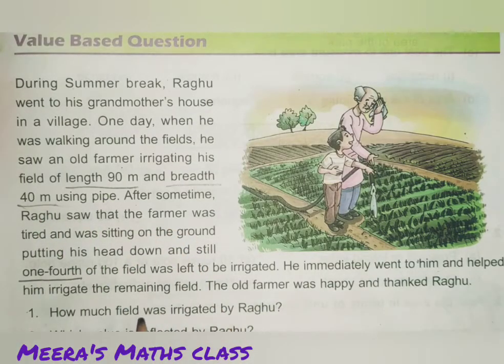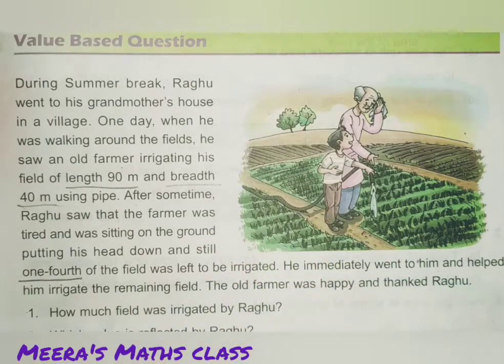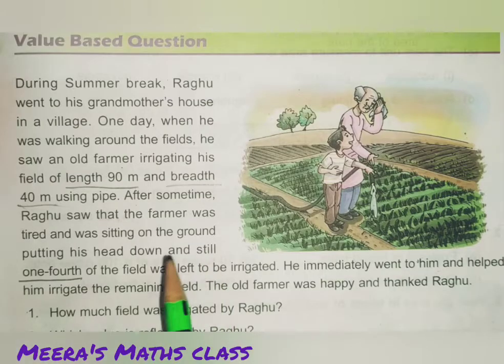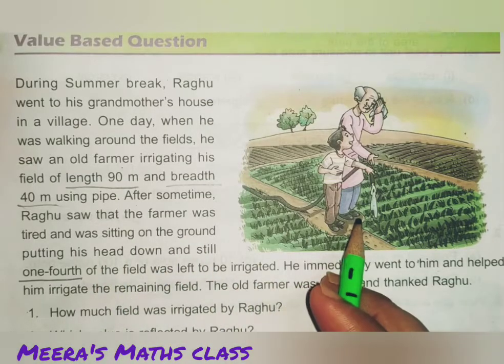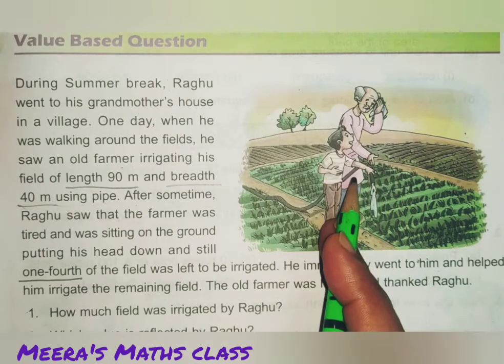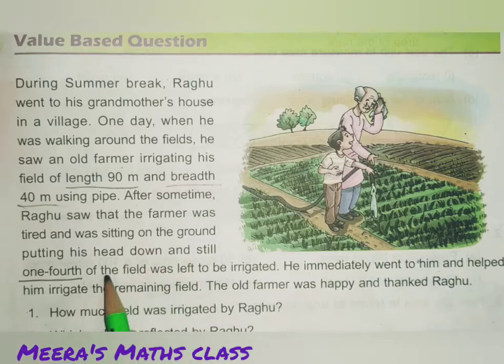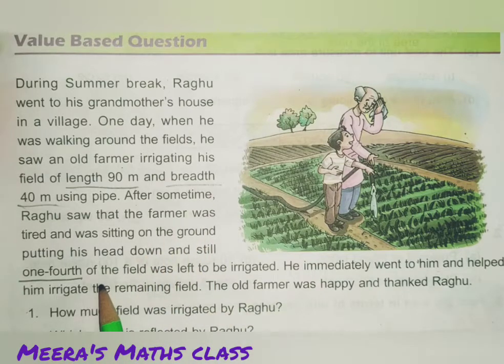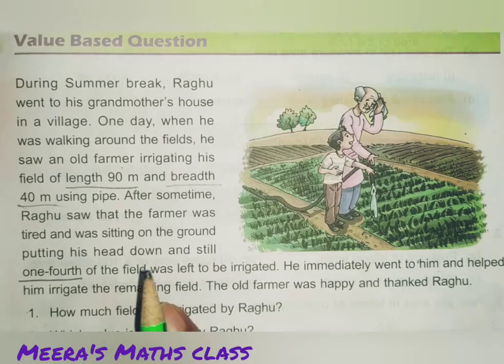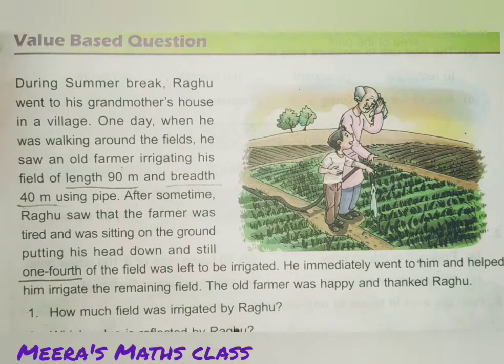Number one, this is the dimensions given for the rectangular field. Then, the second point is, he was so tired that the old farmer could not irrigate the whole field. So, he has only done three-fourth of the field and one-fourth was left yet to be irrigated.